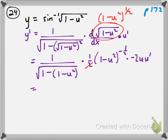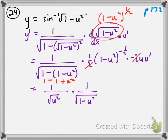So the 2s cancel, and we're going to have 1 minus u squared under the radical. This simplifies to radical u squared. We multiply that by 1 over the square root of 1 minus u squared, and we have the minus sign there yet. So we have multiplied by negative u times u prime. And the square root of u squared is the absolute value of u.